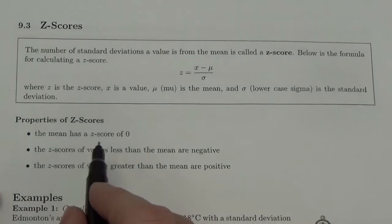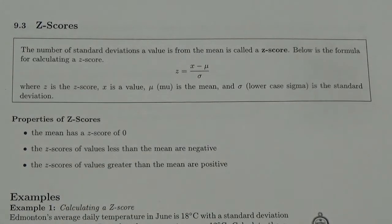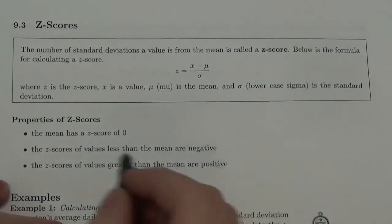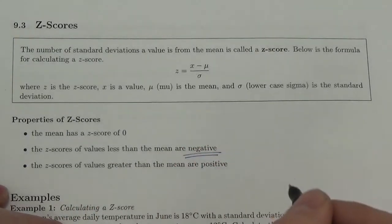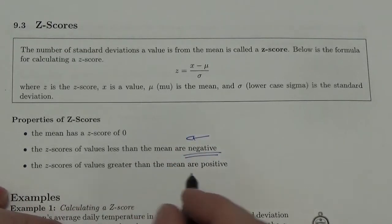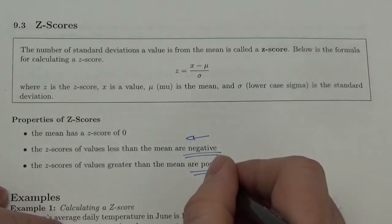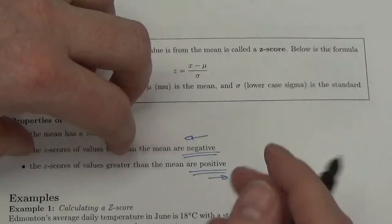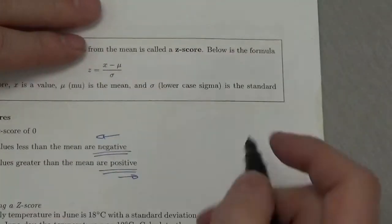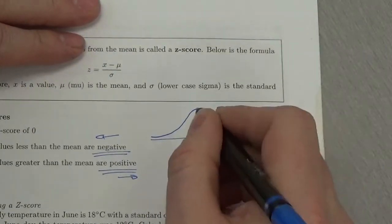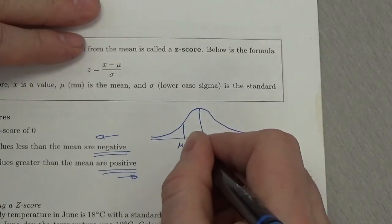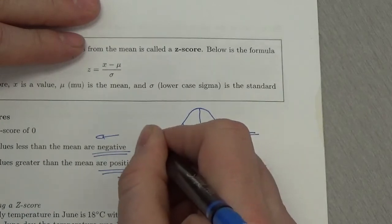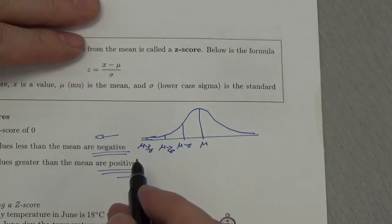Some properties of the z-score: the z-score has a mean of 0. The z-score measures the separation — the number of standard deviations a data value is from the mean. Any data value below the mean will have a negative z-score, and any data value above the mean will have a positive z-score. The negatives and positives balance each other out, so the average z-score is 0. We go out to mean minus one, minus two, minus three standard deviations, and we don't really need to go further than that.